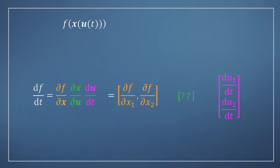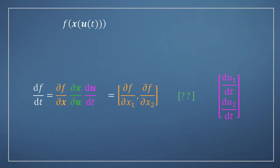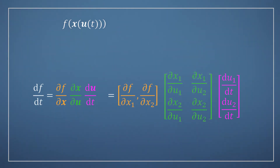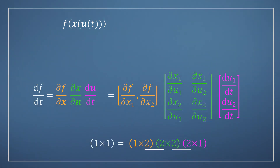We've also seen that differentiating the vector-valued function u with respect to the scalar variable t gives us a column vector of derivatives. But what about the middle term, dx by du? Well, for the function x, we need to find the derivative of each of the two output variables with respect to each of the two input variables. So we end up with four terms in total, which as we saw in the last module, can be conveniently arranged as a matrix. We still refer to this object as a Jacobian, so we can now say that the derivative of f with respect to t is the product of the Jacobian of f with the Jacobian of x and the derivative vector of u. Notice that the dimensions of these vectors and matrices, as shown here, are such that this operation is possible and that they will return a scalar, just as we expected.